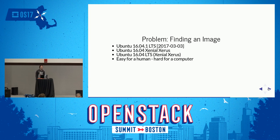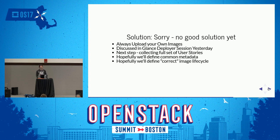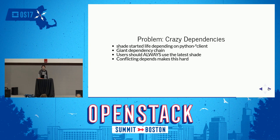There's another problem: how do you find the image you want to boot? These are the names of the latest Ubuntu Xenial image on Vexhost, CityCloud, and Internap — as a human that's easy, but as a computer not so much. There's not a good solution for that. We had conversations about it in the Glance Deployer session yesterday. There's an action item to collect user stories and hopefully define some common metadata that we expect deployers to put into images. My solution today is: always upload your own images — it is the only way to be sure you know what the image is called on all clouds and what content it has.